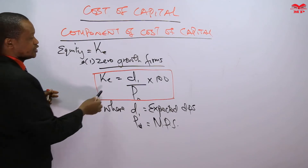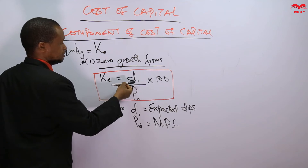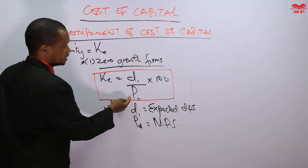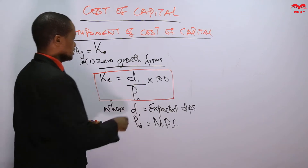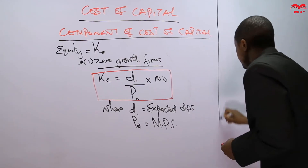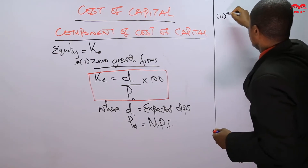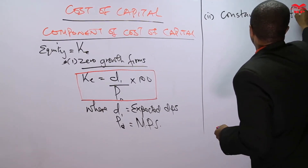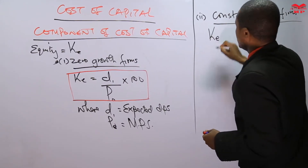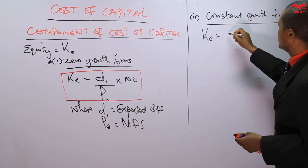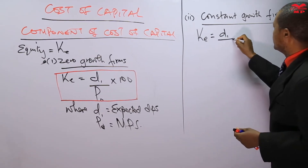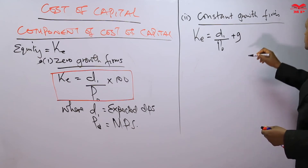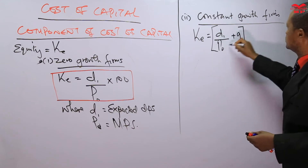This is quite simple because you are given the expected dividend per share and the prevailing market price per share — for a listed company, this is the market price at the exchange. The second category is a constant growth firm. For a constant growth firm, the cost of equity equals D1 over P0 plus G, times 100.